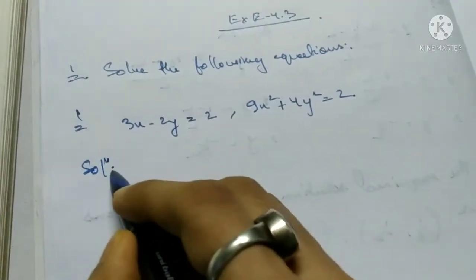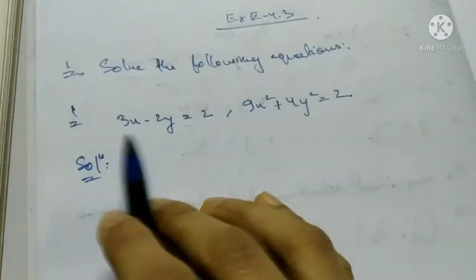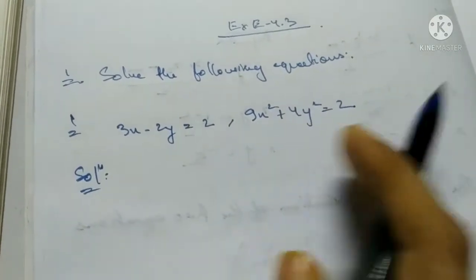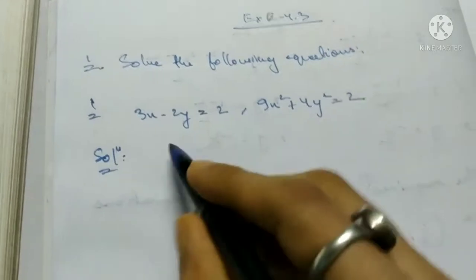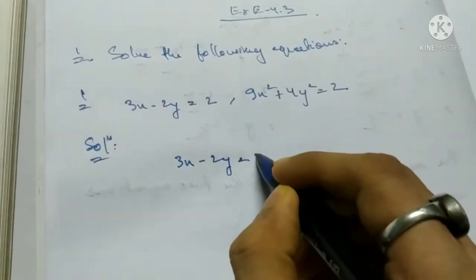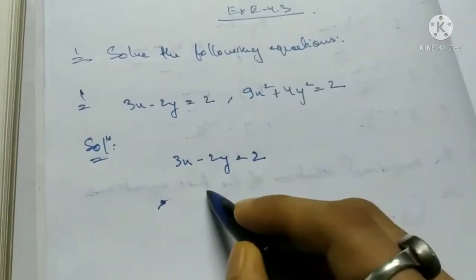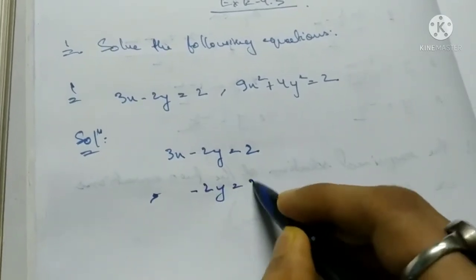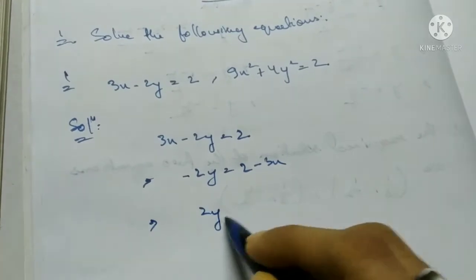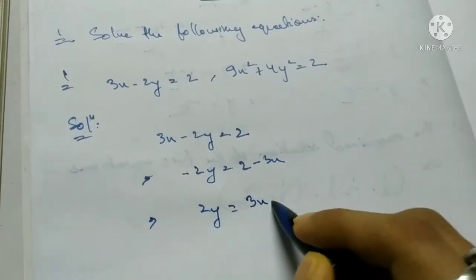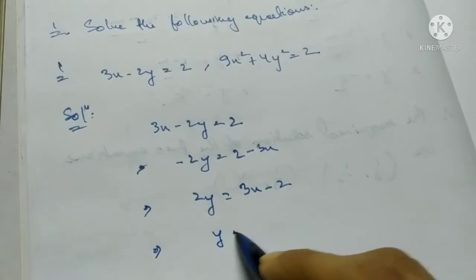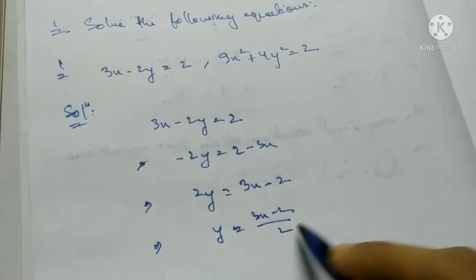From the first equation, I will take out either the x or y value and put it in the second equation. From 3x minus 2y equals 2, I send 3x to the other side: 2y equals 3x minus 2, so y equals (3x minus 2) by 2. This is equation 1.